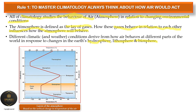In grade 10 you were taught the layers of the atmosphere. These layers are categorized according to temperature status — we use temperatures to categorize how the atmosphere is divided. Remember the basic rule: the higher you go, the colder it becomes. The layers of the earth are a perfect representation of this — as you increase altitude, the height above sea level, temperatures in the atmosphere change.